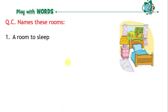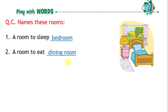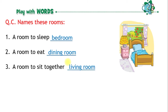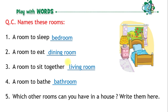Name these rooms. A room to sleep — Bedroom. A room to eat — Dining room. A room to sit together — Living room. A room to bath — Bathroom.